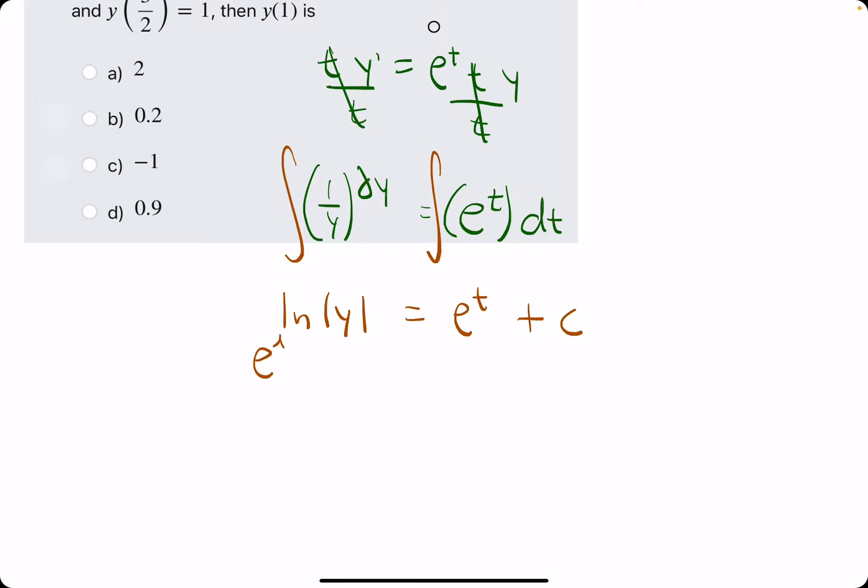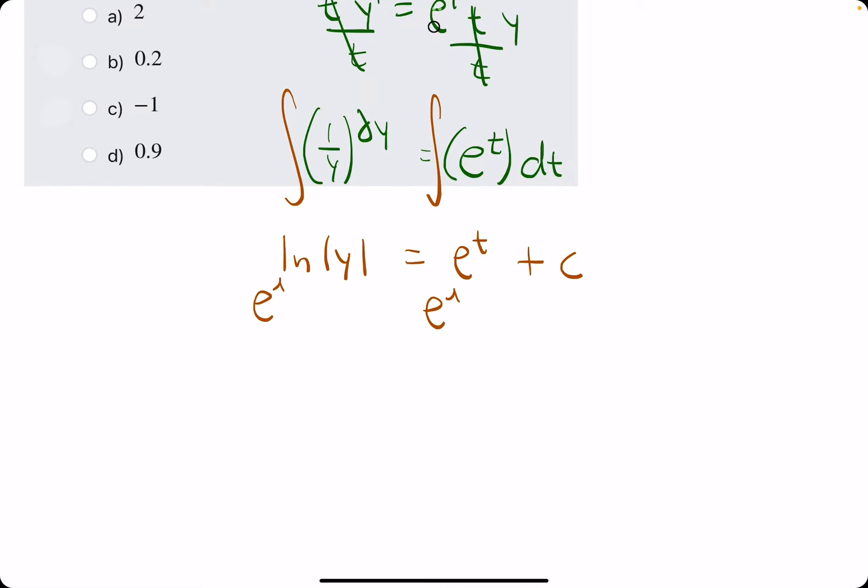We'll go ahead and make e the base of both sides in order to get y by itself. We'll go ahead and do our trick with c. We'll throw it out in front. And so now we will have e, or sorry, c, e to the e to the t. Pretty fun.